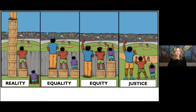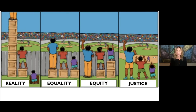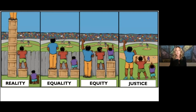But check out that final frame. The final frame says: wait a minute, why are we all standing around on boxes? The big question is, why is there a fence up? I did have a student say to me, 'Professor Harris Perry, now they're all going to get hit in the face with the ball.' So there are safety issues about why the fence might be up. But if we move to a justice framework, instead of looking at the boxes, we start asking about the fences.